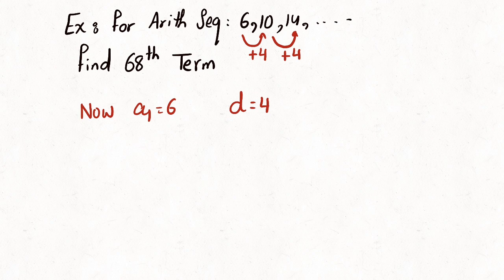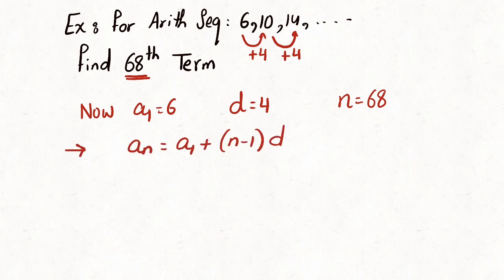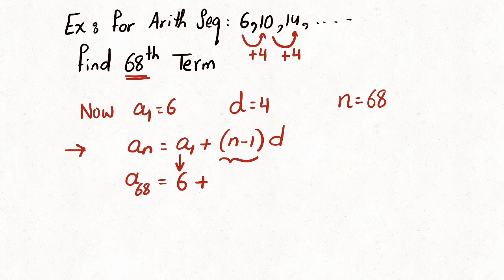We apply the nth term rule: a_n = a1 + (n − 1) × d. Since we are asked for the 68th term, n equals 68. All you have to do is replace the values and find the required value.